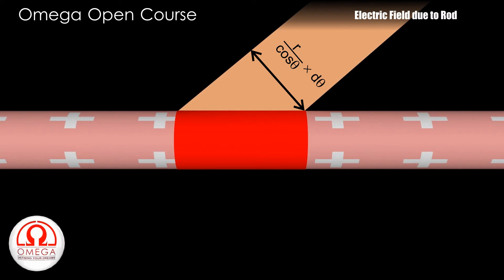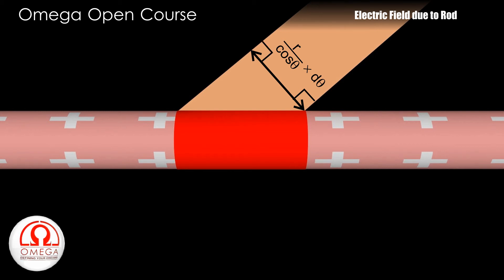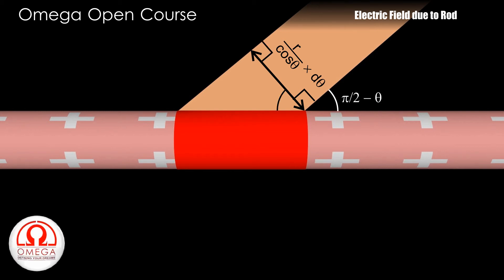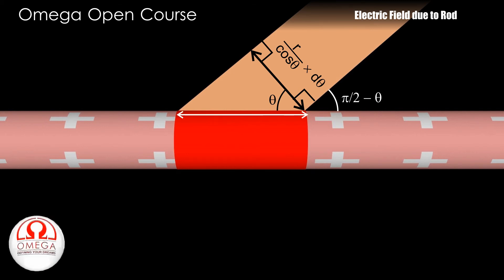But since d-theta is infinitesimally small, both these angles are almost 90 degrees. From simple geometry, we know that the rod makes an angle theta with this line. Hence, the length of the small part of the rod is R·d-theta divided by cos²theta.